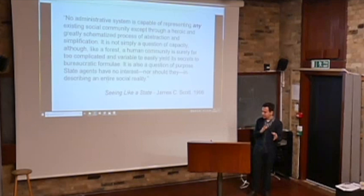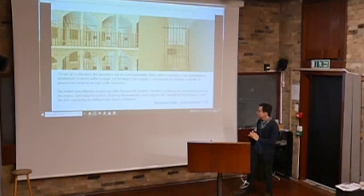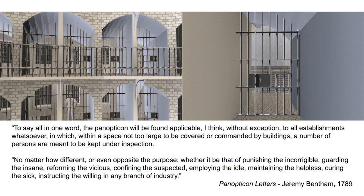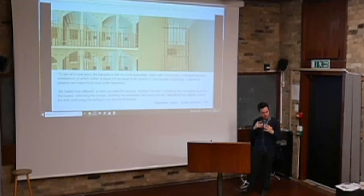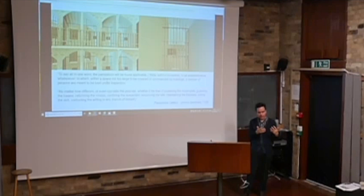There is a simultaneous sense where in some ways the Panopticon is analogous to modern society, but we might begin to deconstruct or question the degree to which it naturally models social institutions, as Foucault claims. To the contrary, Bentham himself writes: 'To say all in one word, the Panopticon will be found applicable, without exception, to all establishments whatsoever, in which, within a space not too large to be covered or commanded by buildings, a number of persons may be kept under inspection, no matter how different or even opposite the purpose.' So there is this tension — Bentham universalizes the institution, and we can question whether that holds in the modern era.